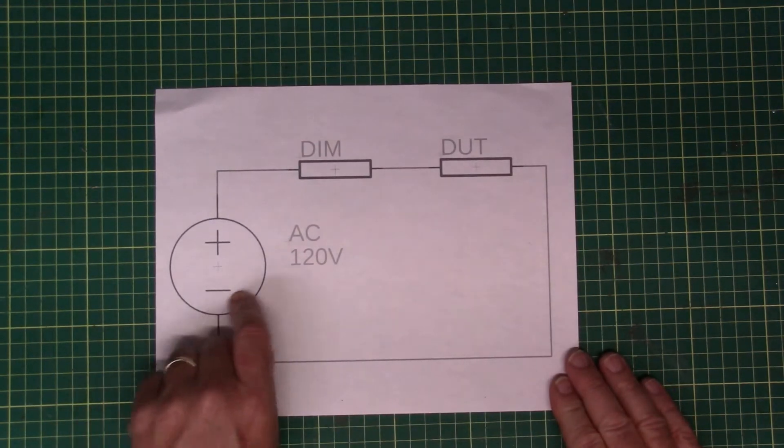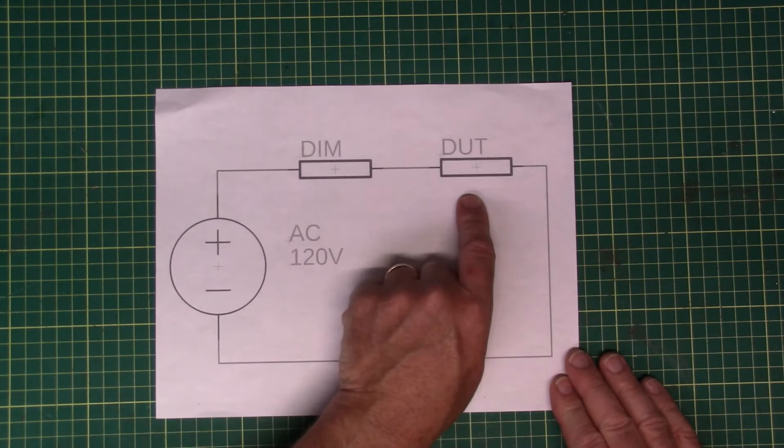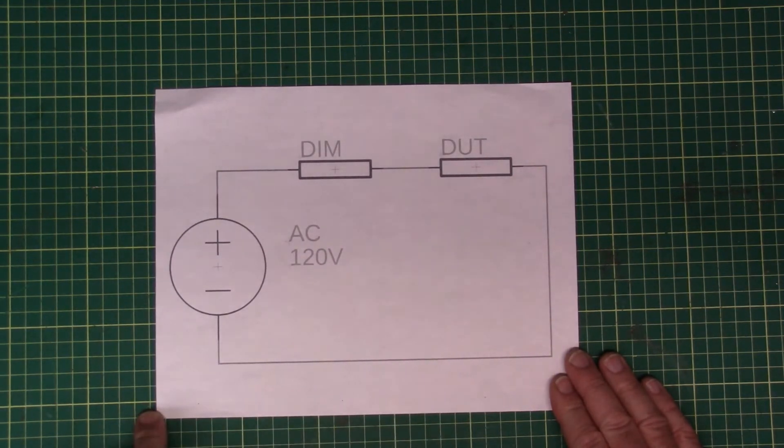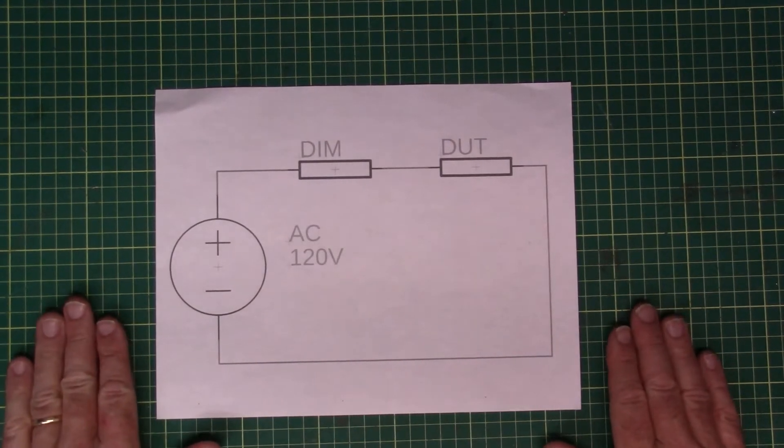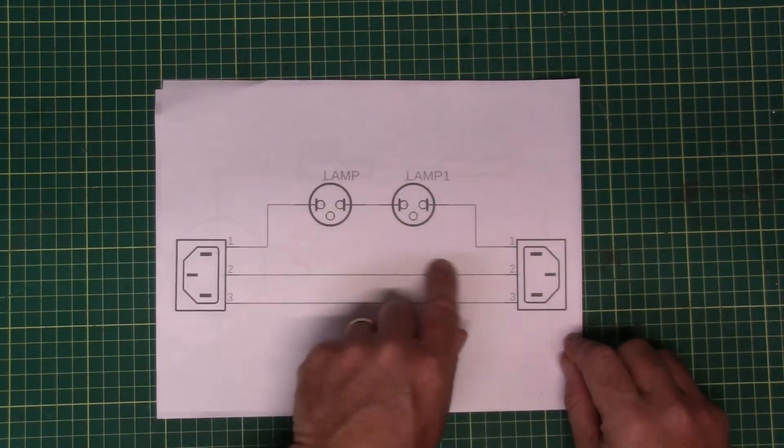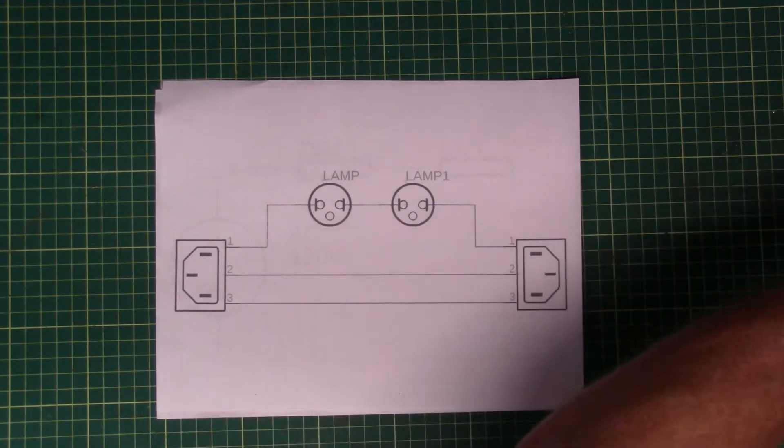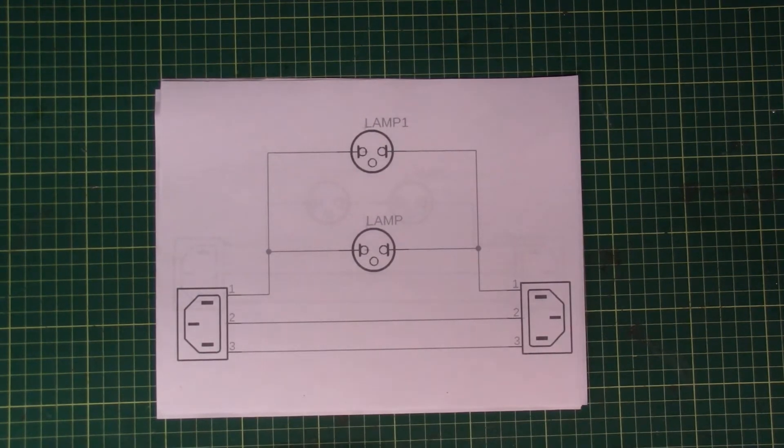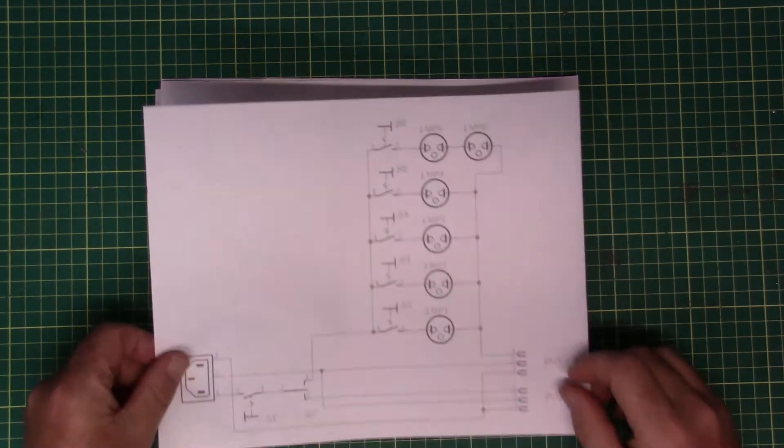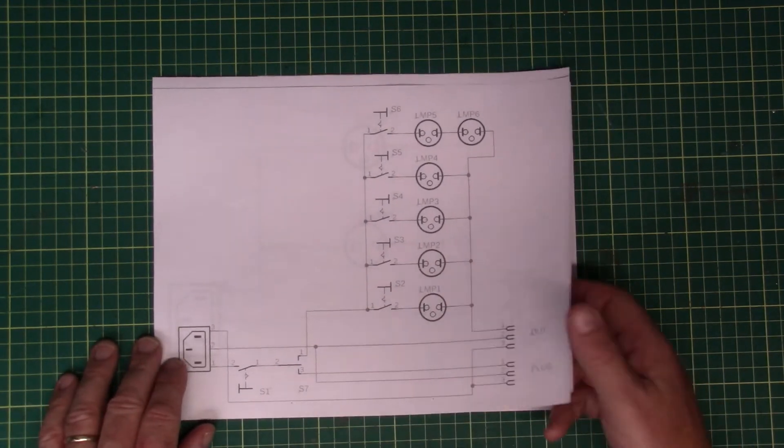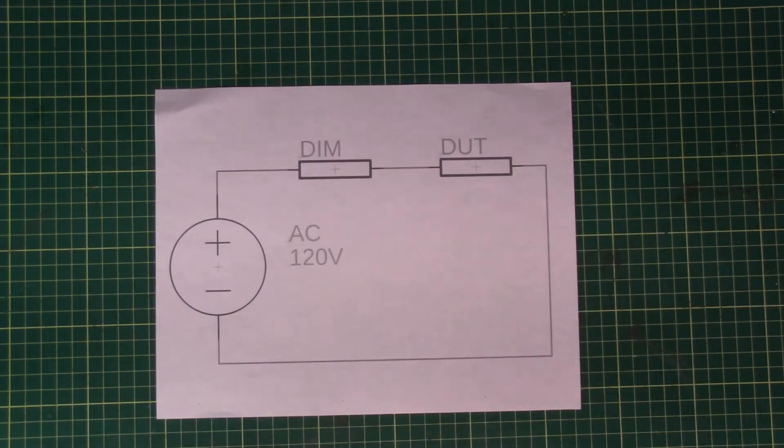A voltage source, a resistor, and then another resistor. The first one being the dim bulb, and the second resistor being the device under test. Now it doesn't really matter, once we get it down to this electrical level, if we have two bulbs in series, two bulbs in parallel, or a more complicated system like mine with a bunch of bulbs in both series and parallel. They all break down to this simple equivalent circuit.